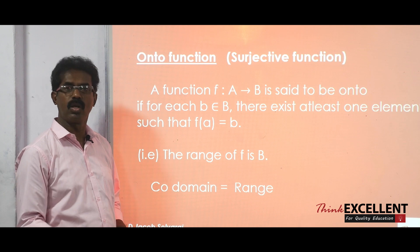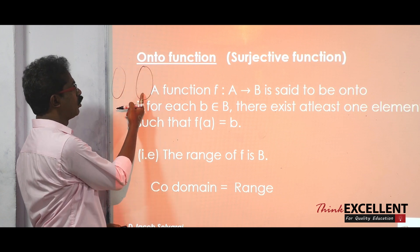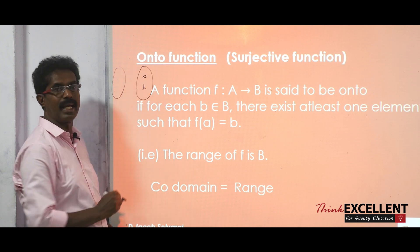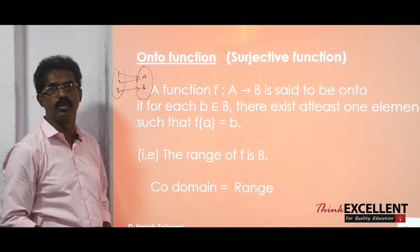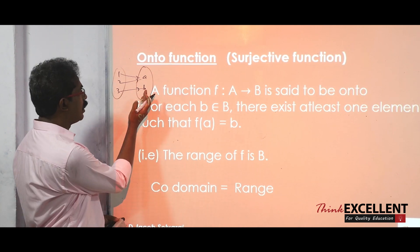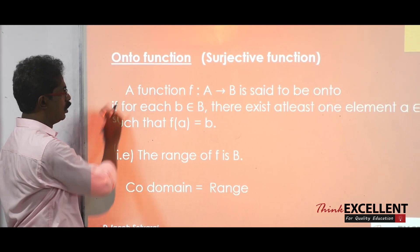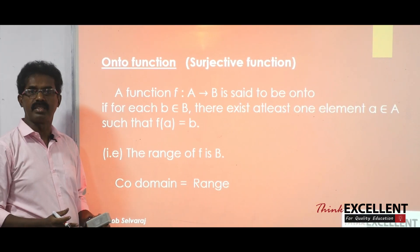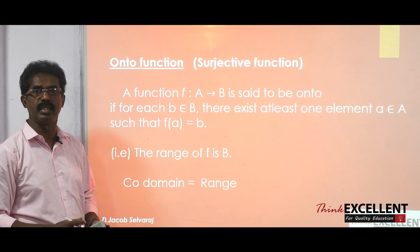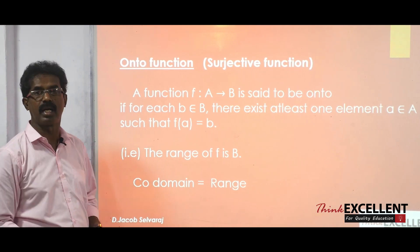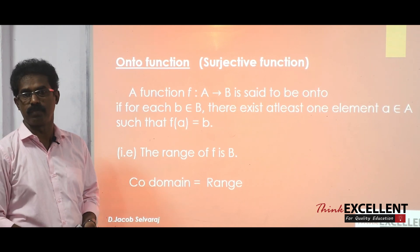The next one is onto function. In an arrow diagram, every element of the co-domain has a preimage — no element is left out. Then we say it is onto function. In onto function, the range of f is B, or you can say the co-domain and range are both the same. The another name of onto function is surjective function.